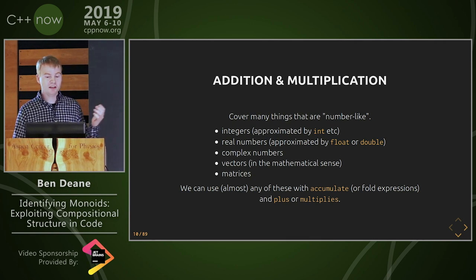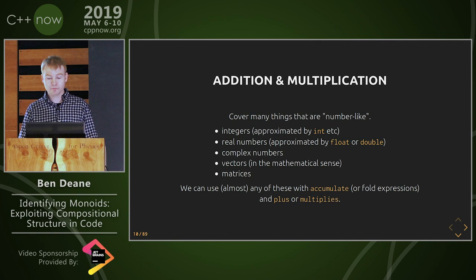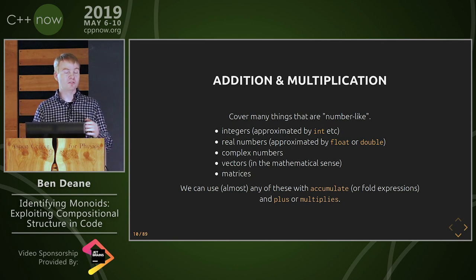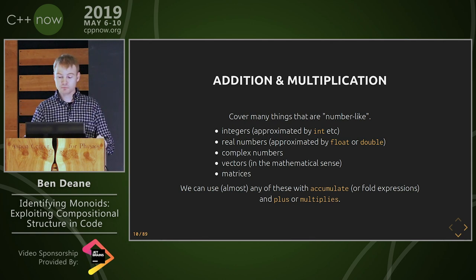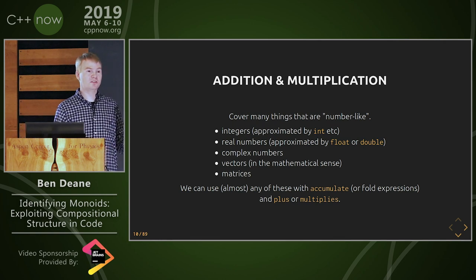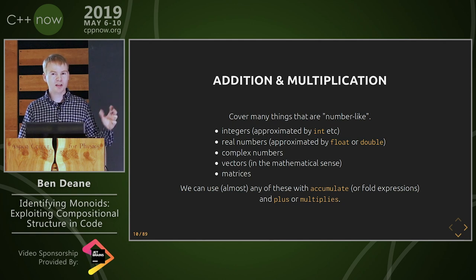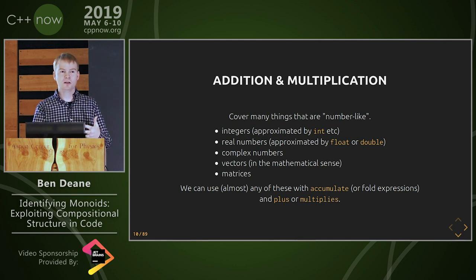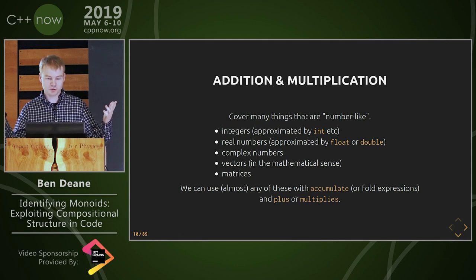We can use any of these with accumulate or fold expressions and plus and multiply. A complex number in particular is a pair in the complex plane. Addition would be member-wise. Multiplication is easier to think about in terms of polar representation — magnitude and angle. To multiply complex numbers, you multiply the magnitudes and sum the angles. Vectors in the mathematical sense: we can do member-wise addition and that forms a monoid. But there's no real multiplication for vectors because the inner product, the dot product, isn't closed — you get a scalar.